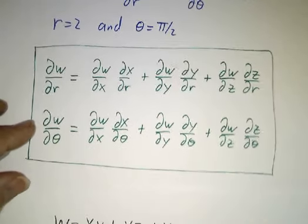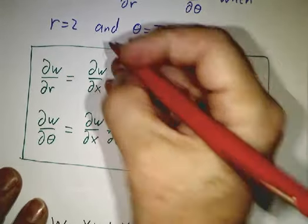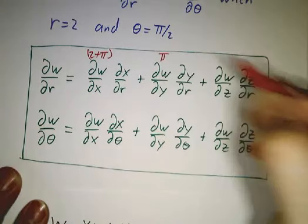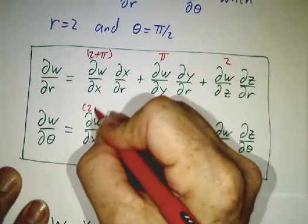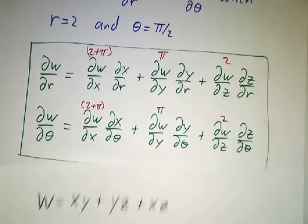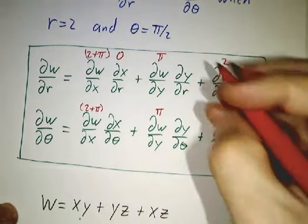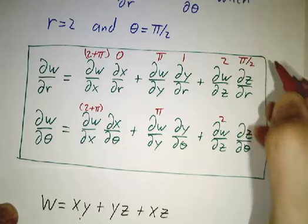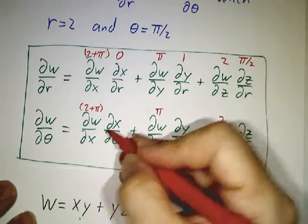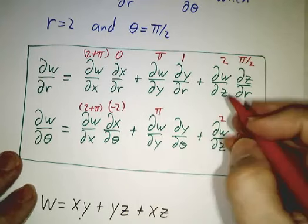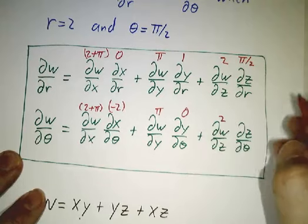Going back to our original formulas, we plug in the values. ∂w/∂x was 2 + π, ∂w/∂y was π, ∂w/∂z was 2. And ∂x/∂r was 0, ∂y/∂r was 1, ∂z/∂r was π/2. For θ: ∂x/∂θ was -2, ∂y/∂θ was 0, ∂z/∂θ was 2.